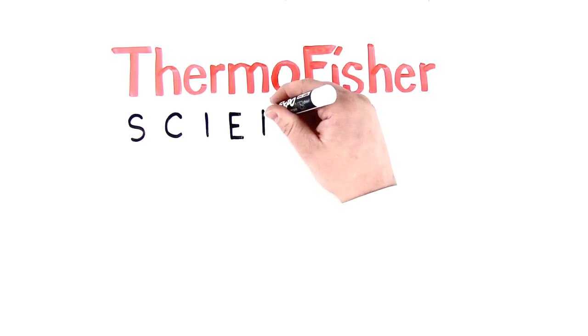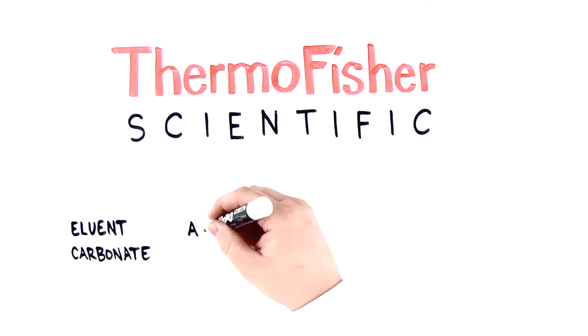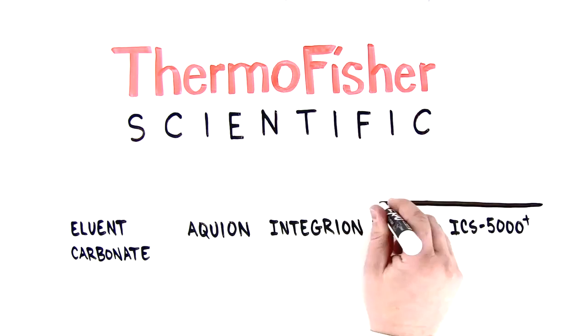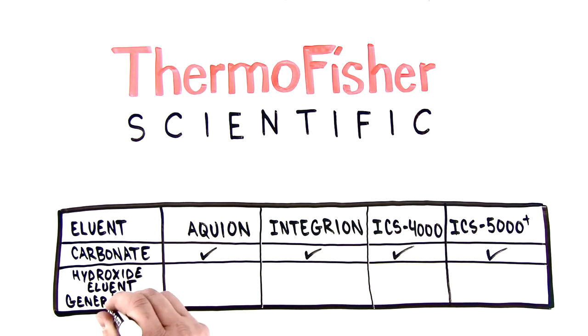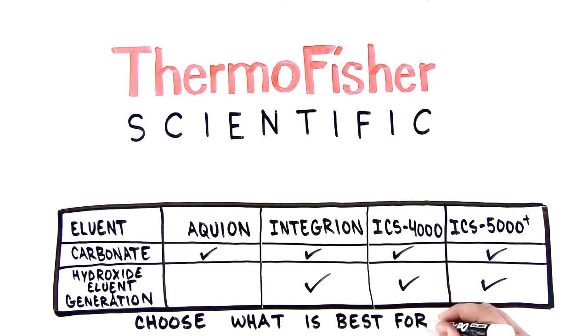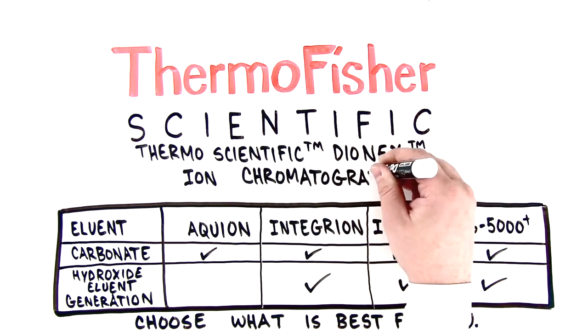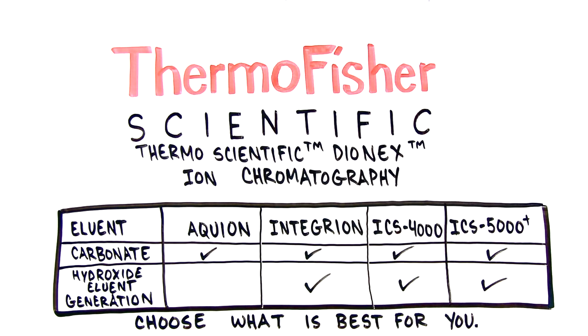ThermoScientific ion chromatographs support carbonate eluents on all systems and eluent generation of hydroxide eluents is available across routine and advanced systems. Choose what is best for you. ThermoScientific DianX ion chromatography designed around world leading chemistry designed for you.